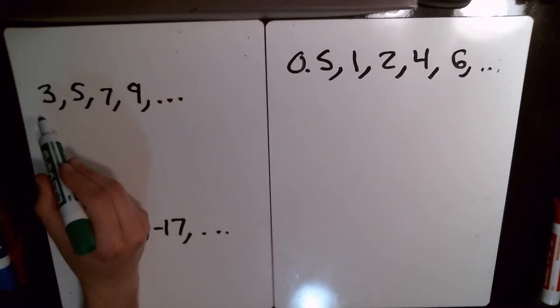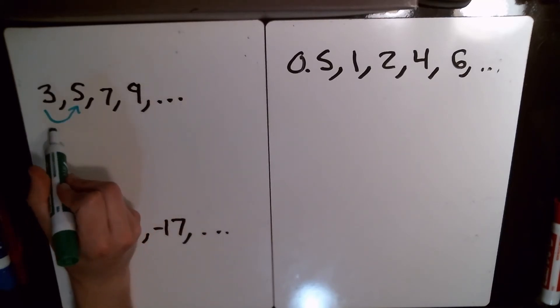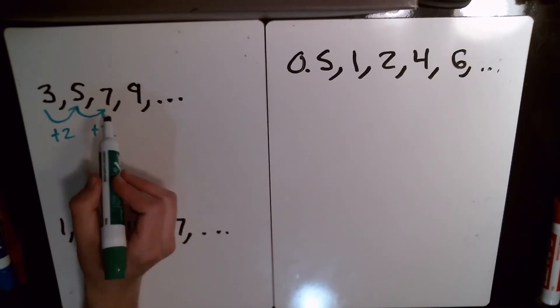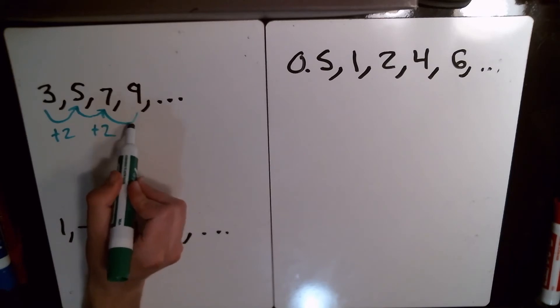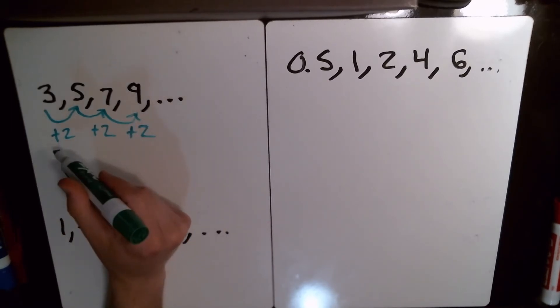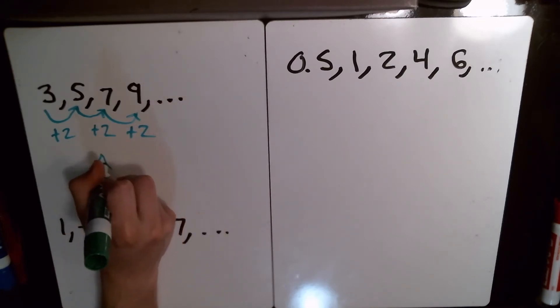From here to here, what are we doing? To go from 3 to 5, we're adding 2. To go from 5 to 7, we're adding 2. And to go from 7 to 9, we're adding 2. So what does that mean? It means this sequence is definitely guilty - it is an arithmetic sequence.